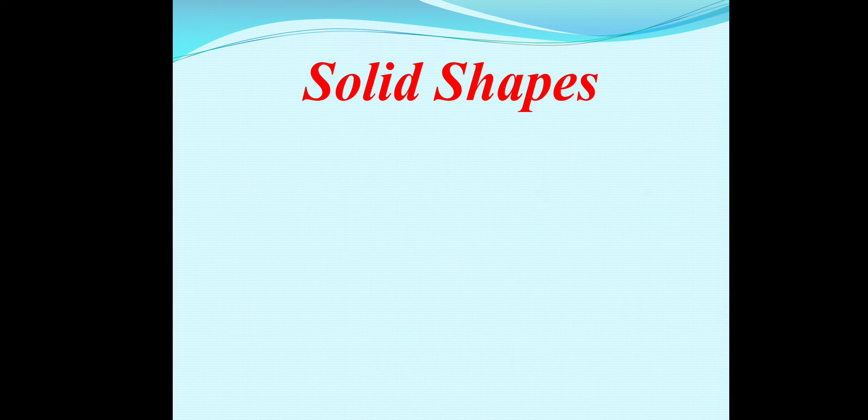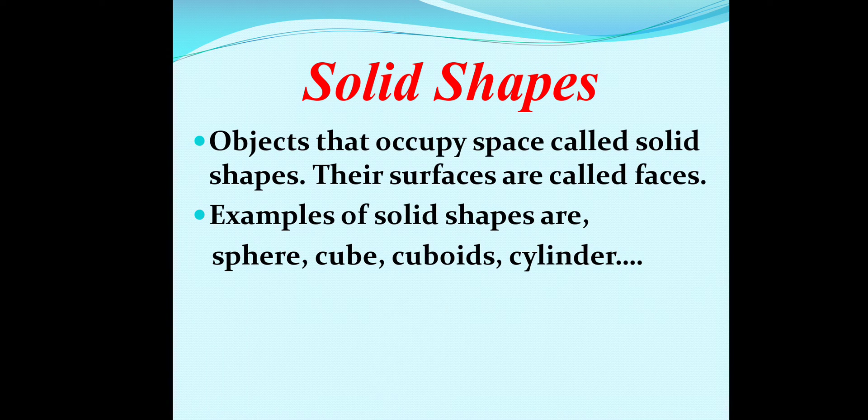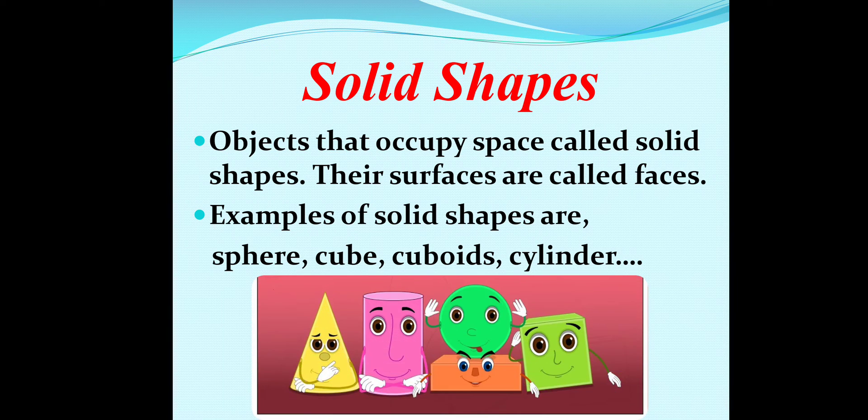Now, the next type of shape is solid shape. Objects that occupy space are called solid shapes. Their surfaces are called faces. Examples of solid shapes are sphere, cube, cuboid, cylinder.